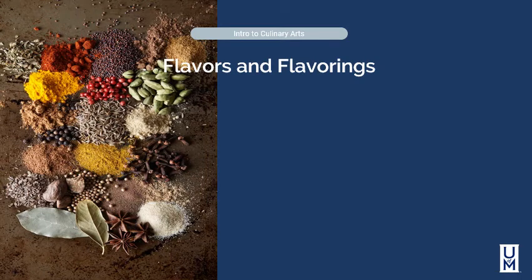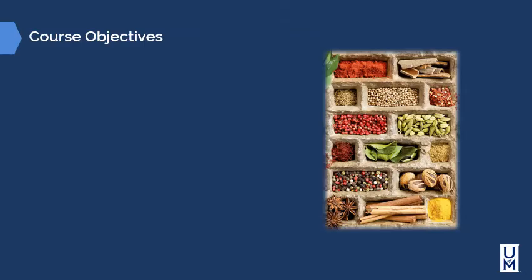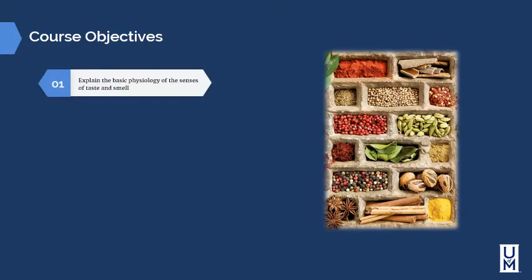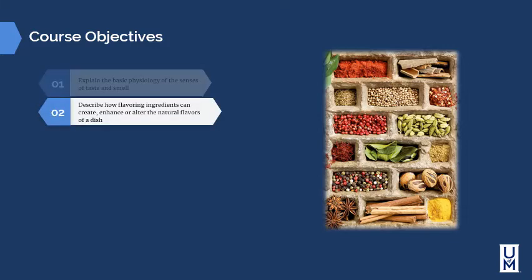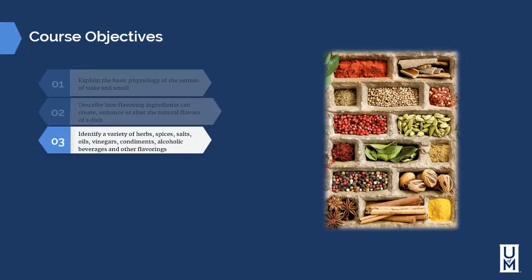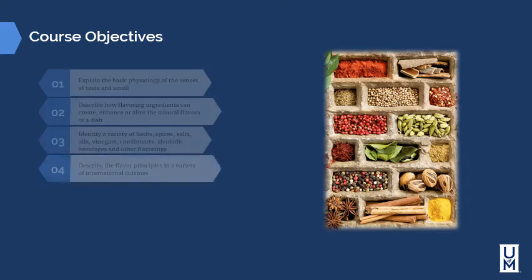In this module, we're going to talk about flavors and flavoring and how to use them. The objectives for this module are: explain the basic physiology of the senses of taste and smell; describe how flavoring ingredients can create, enhance, or alter the natural flavors of a dish; identify a variety of herbs, spices, salts, oils, vinegars, condiments, alcoholic beverages, and other flavorings; and describe the flavor principles of a variety of international cuisines.